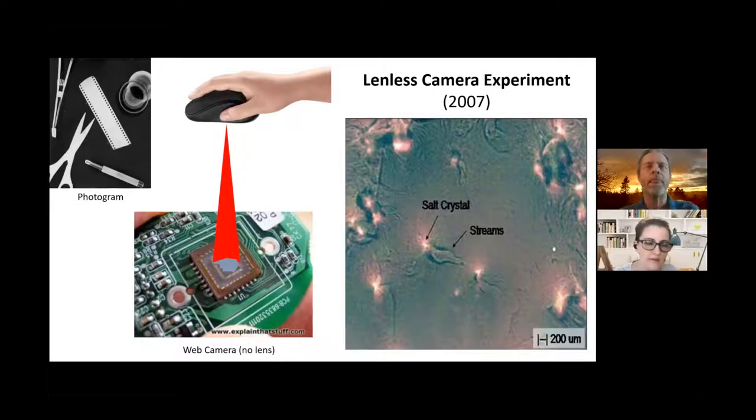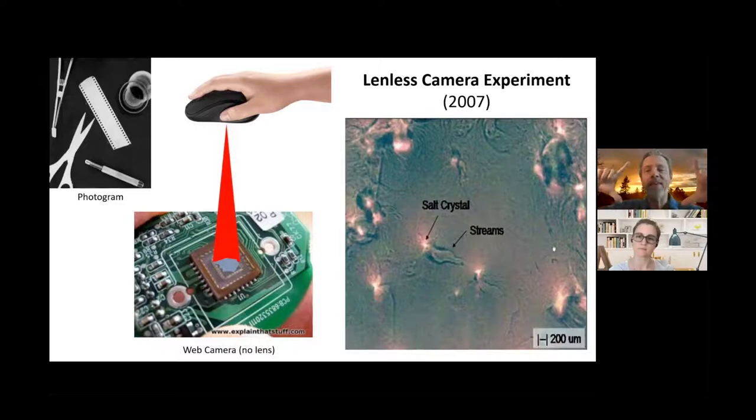When I was a boy I used to do black and white photography. On the top left is what happens when you take enlarging paper, put objects on it, and expose it to light—those are called photograms. I used to do that as a kid.